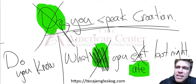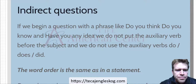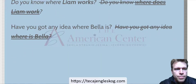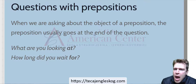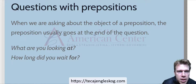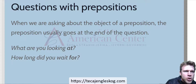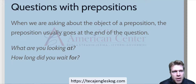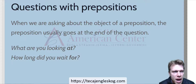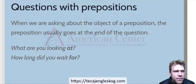The last type we'll cover is prepositional questions. When we are asking about the object of a preposition, the preposition usually goes at the end of the question: 'What are you looking at?' or 'How long did you wait for?' We don't say 'At what are you looking?' or 'For how long did you wait?'